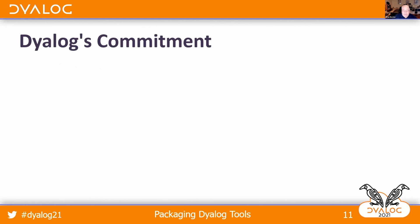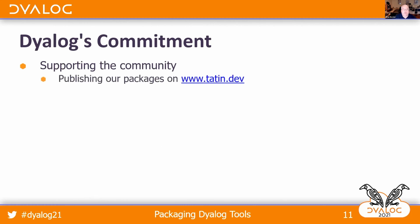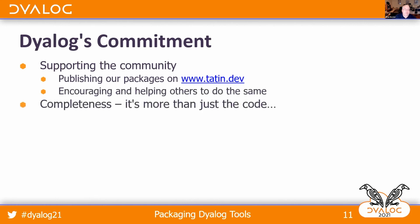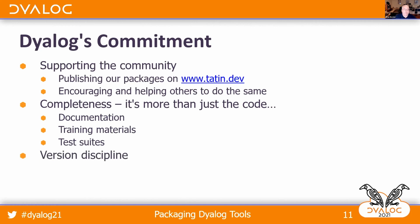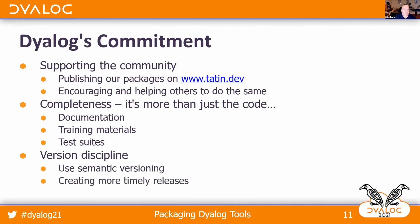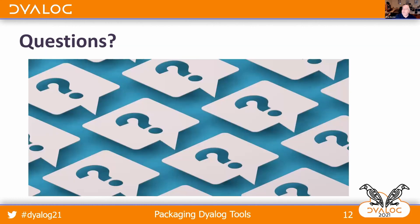Dyalog is committed to supporting the community: we're going to publish our packages on tatin.dev and encourage and help others to do the same. Completeness means more than just the APL code — it includes good documentation, good training materials and examples, and test suites to ensure code quality. We also need to exercise version discipline, using semantic versioning and creating more timely releases so that when we bump a version number, published releases actually correspond to changes in the code.